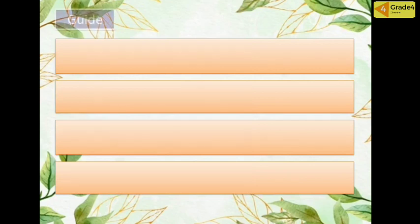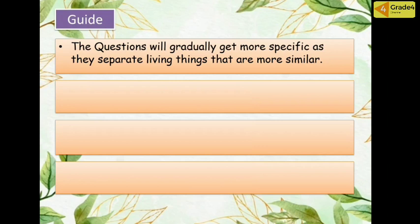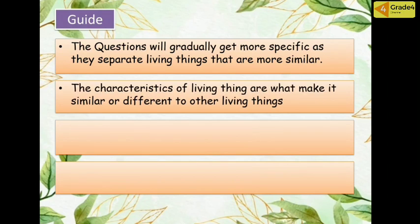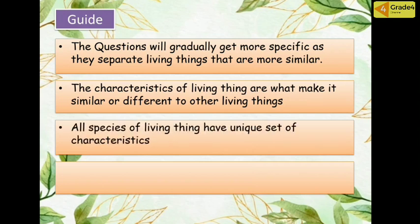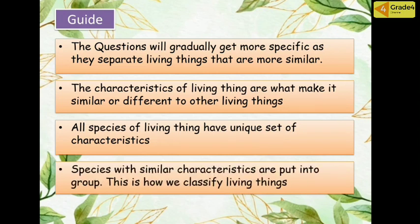You must know how to make an identification key. First, the questions will gradually get more specific as they separate living things that are more similar. Second, the characteristics of living things are what make them similar or different to other living things. Third, all species of living things have a unique set of characteristics. And lastly, species with similar characteristics are put into groups. This is how we classify living things.